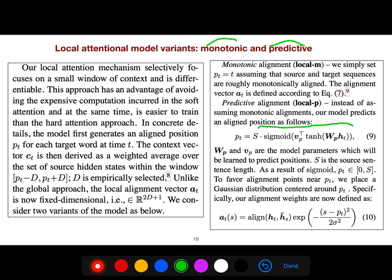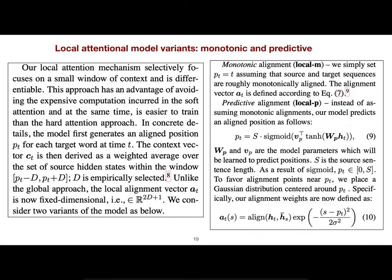And this is a local attention variance because even local attention could be either monotonic or predictive. Predictive is a little bit complex because in monotonic, because finally, A of T is this. The alignment weights are this. And so P of T for monotonic is just T. No problem. But for predictive, you see, it's another model for itself. So for itself is this model.